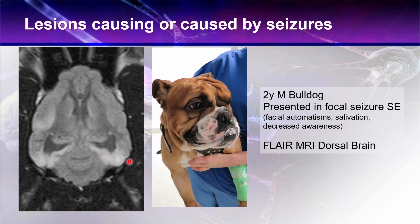The question is, in this dog, is this change secondary to having the seizures? Is this a postictal edema, or is this the primary disease? Does this dog have an encephalitis through this region, which is often referred to as limbic encephalitis?